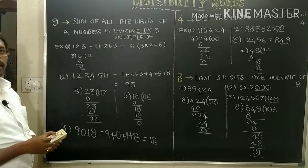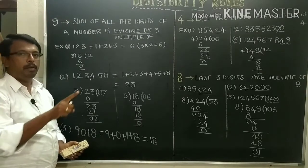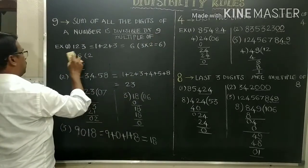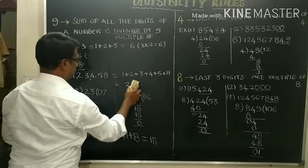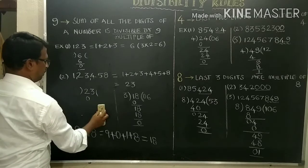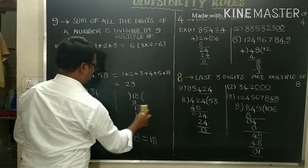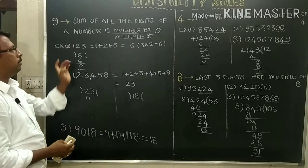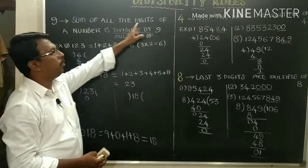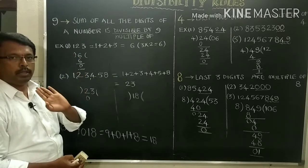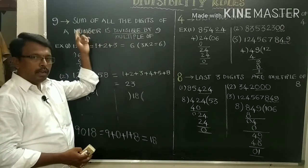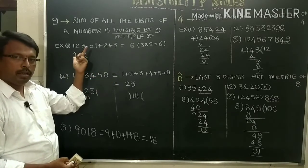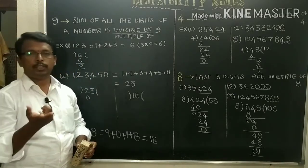Next, the divisibility rule of 9. The divisibility rules of 3 and 9 are both the same with just a small difference. Let us observe the difference: the sum of all digits of a number is divisible by 9 or a multiple of 9. The rule is the same but for 3 it must be in the 3 times table, and for 9 it must be a multiple of 9.